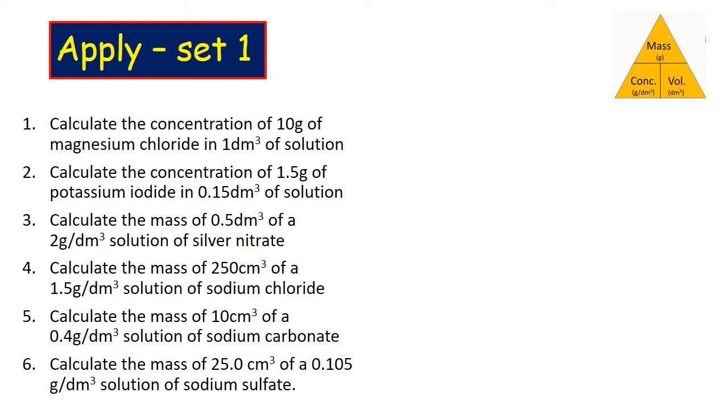I'd like you to have a go at these ones now. Pause the video and try these. Question one: Calculate the concentration of 10 grams of magnesium chloride in one decimetre cubed of solution. That gets me 10 g/dm³.